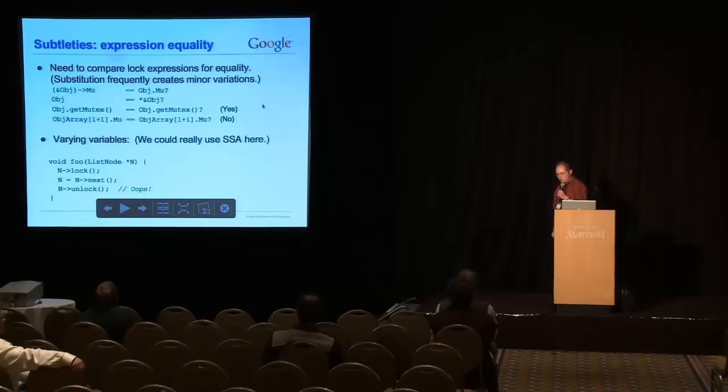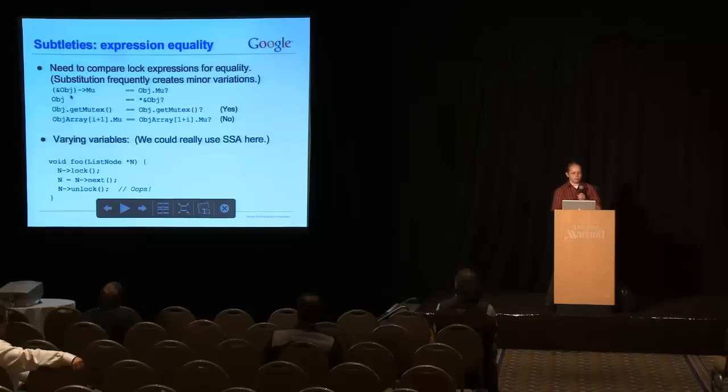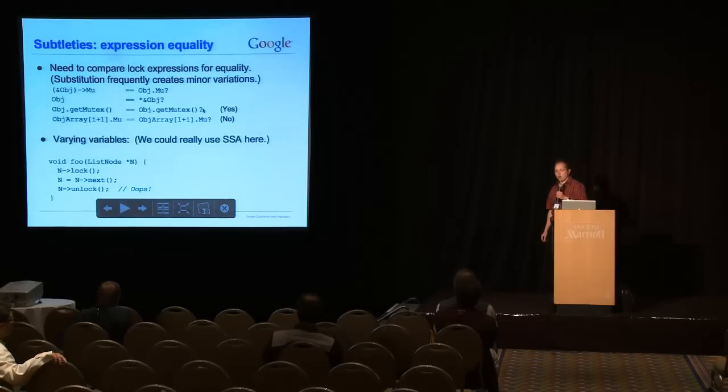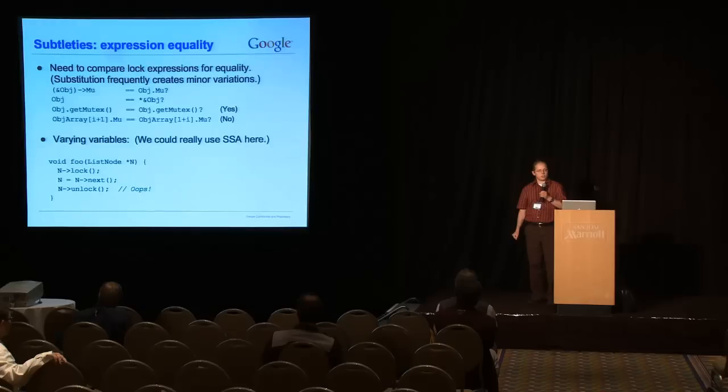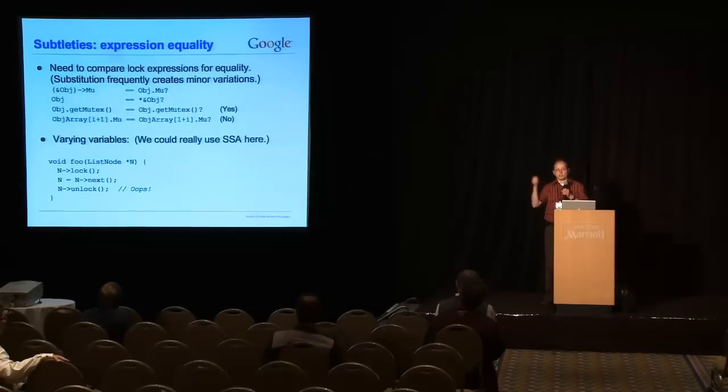So, another subtlety is expression equality, because as you notice, especially when you do this substitution, you often get minor variations. If you do take the address of an object and use the arrow operator, is that the same as just doing a dot off of the object? Similarly, you can have other combinations that simplify to the same. A tricky bit is if you call a function off an object, are those two expressions equal? Well, in a truly sound analysis, no, they would not be equal. You can't guarantee, unless it's a pure function, that you're going to get the same result every time you call it. But in reality, this arises primarily when people are using smart pointer classes. In that case, if you want to get any reasonable checking, you have to assume that if they used this function to grab hold of a mutex, that that's going to return the same mutex every time you call it, because otherwise, it doesn't really make much sense.